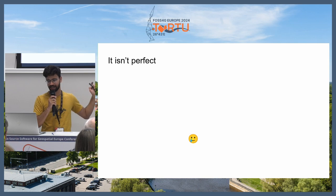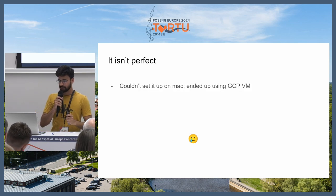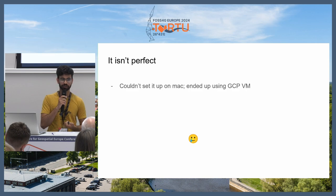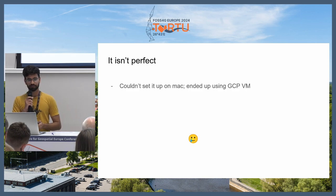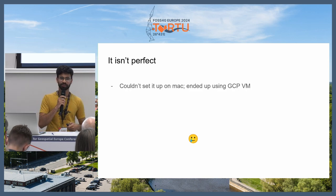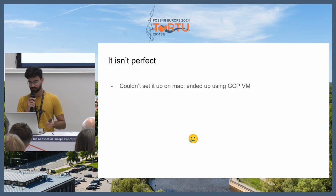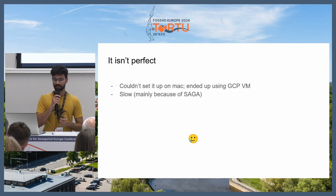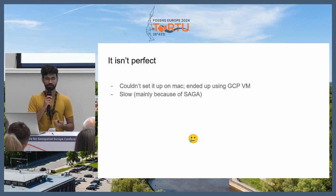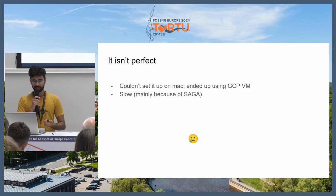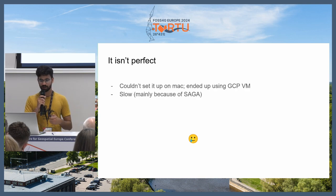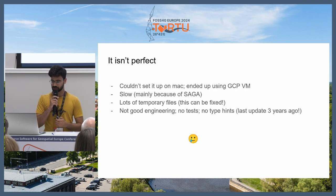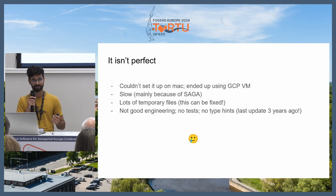Since I couldn't set it up on Mac, I ended up creating a virtual machine on GCP — I still have it running. If you're on Mac and want to give it a shot, reach out and I'm happy to give you access to the VM. The process is slow — the example we saw took 30 to 40 seconds, and depending on the input DSM size and resolution it can take minutes. It's slow mainly because of SAGA and because it generates a lot of temporary files.